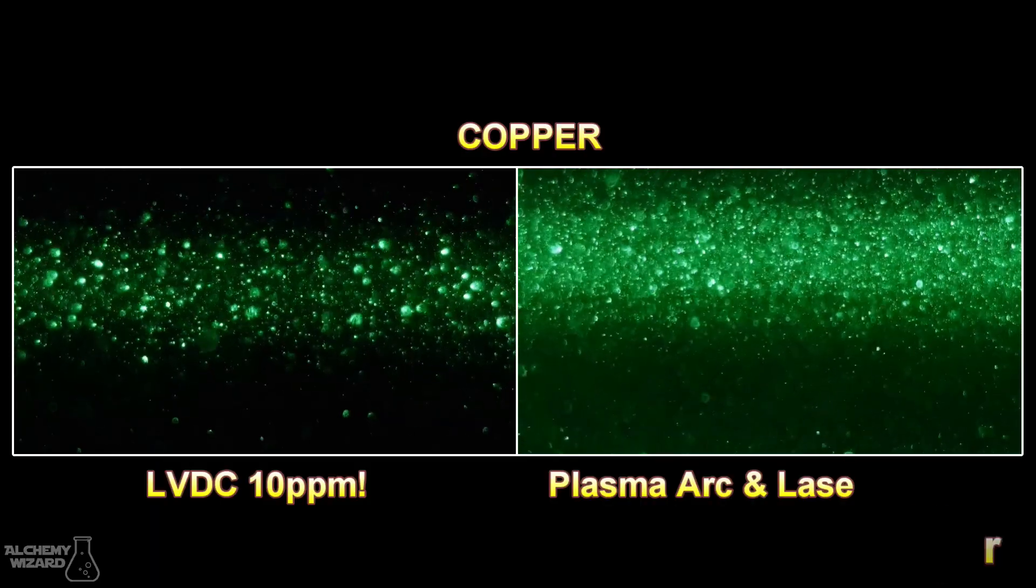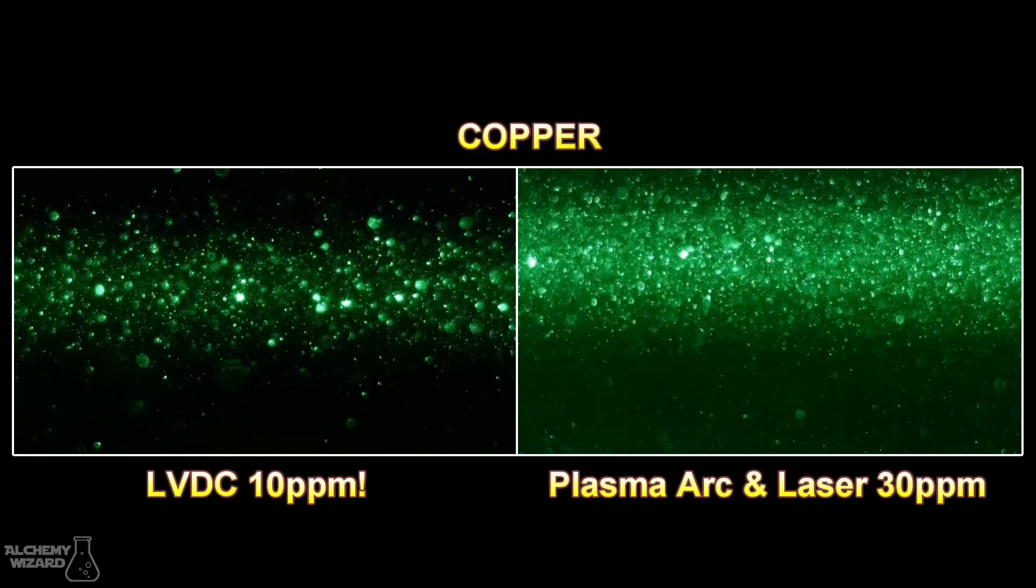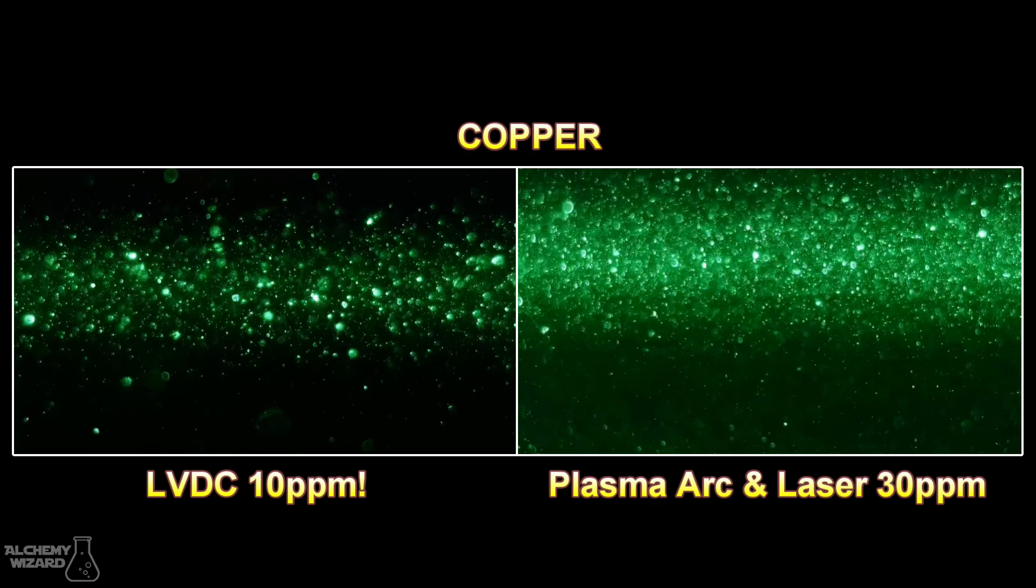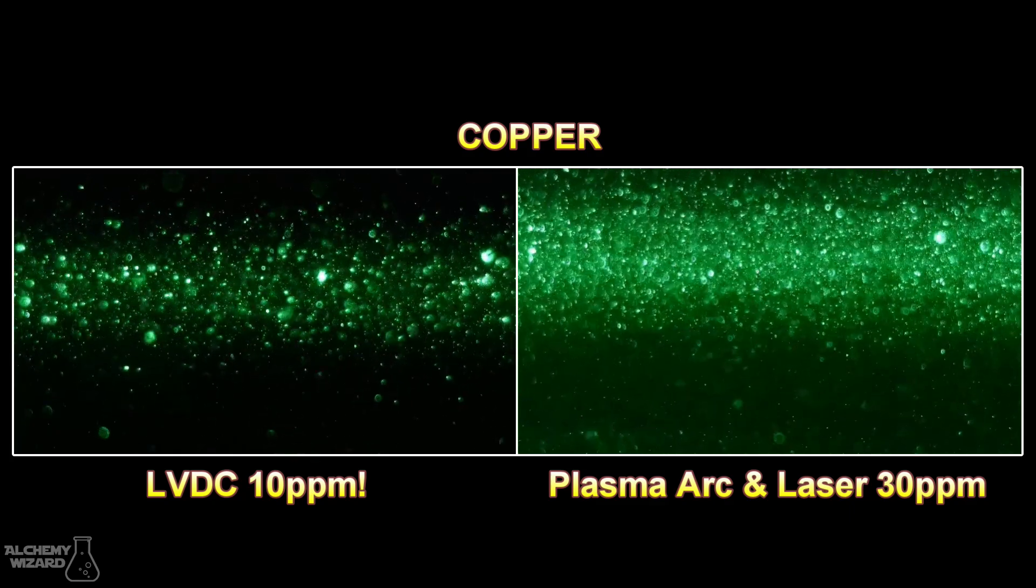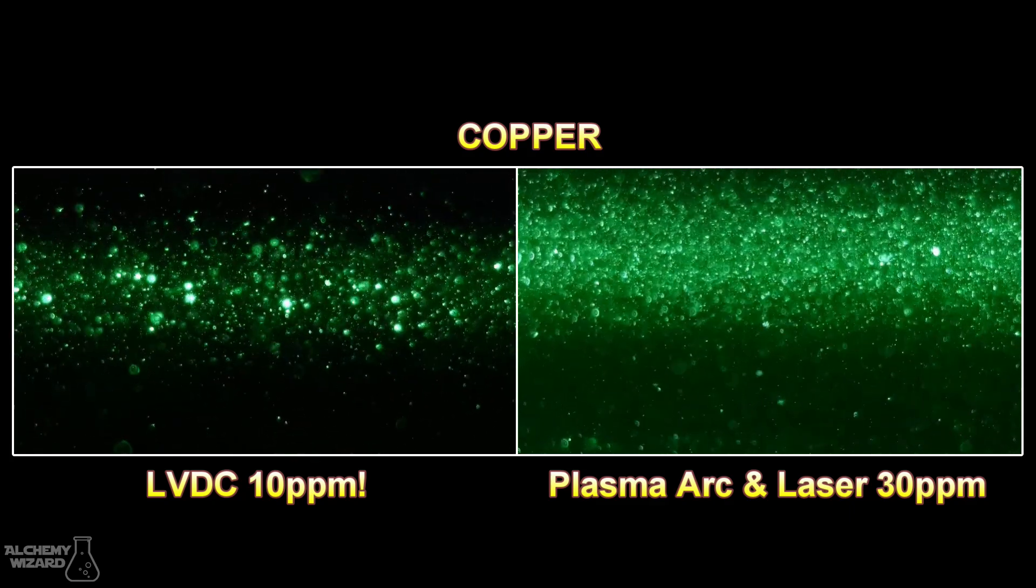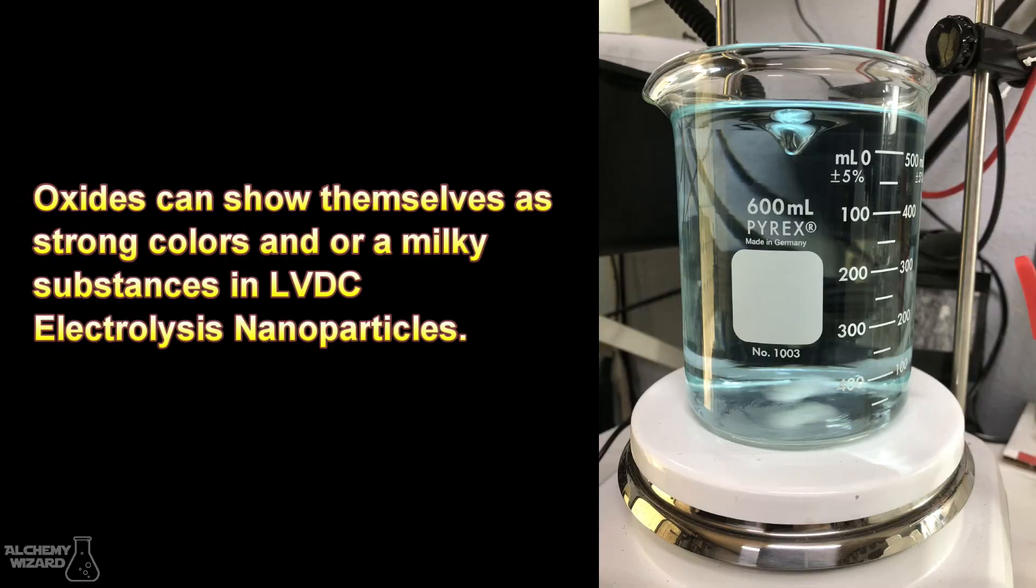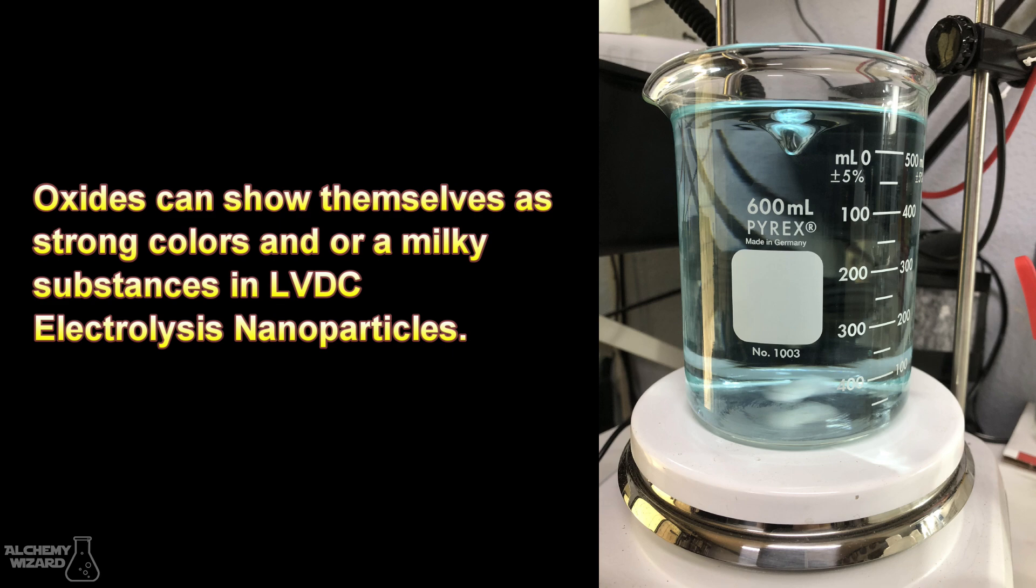And the nanoparticle count that you get from low-voltage hydrolysis nanoparticles is kind of low. You can expect something around the range of 10, 15 parts per million. Some of the metals you'll be able to boost quite high, but other metals, that's pretty much all you're going to get. And you're going to get oxides in low-voltage DC hydrolysis, so it's not going to be 100% nanoparticles.